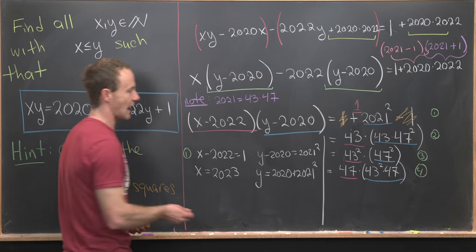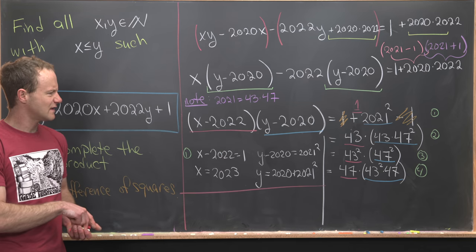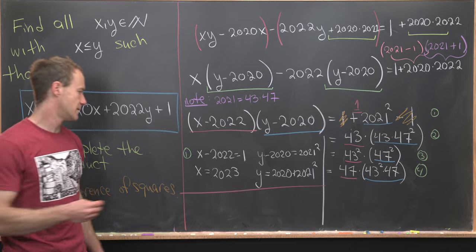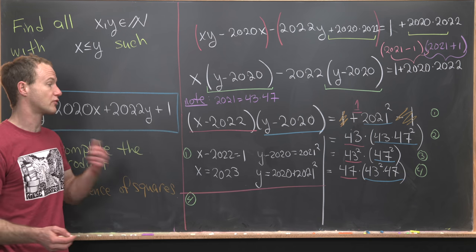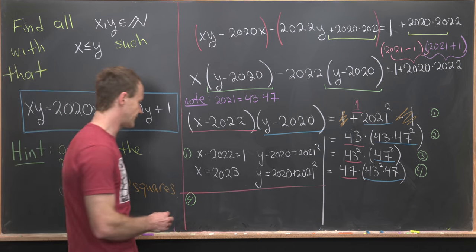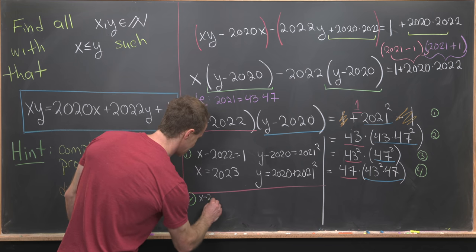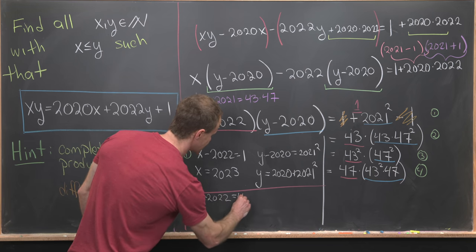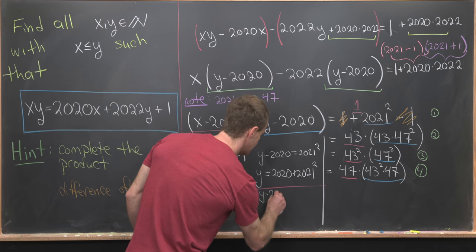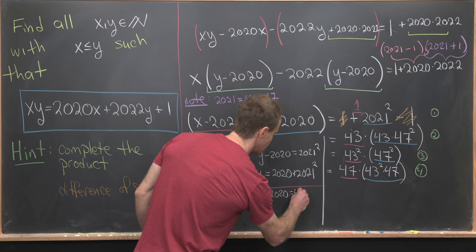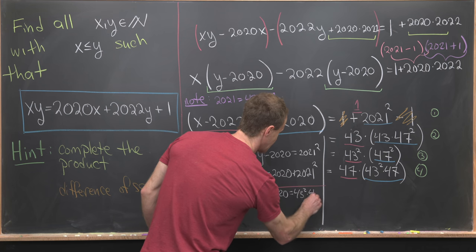Okay, good. Now we can move on to one of the others. So maybe let's look at the fourth one. I'll let you guys work out the second and the third because they're all pretty similar. So notice the fourth one will give us x - 2022 = 47, and then y - 2020 = 43²×47.